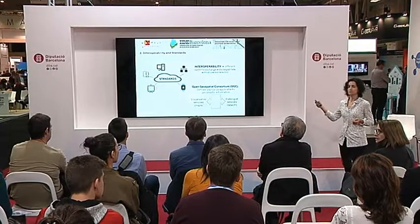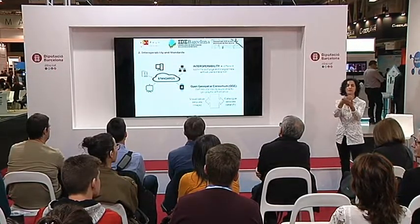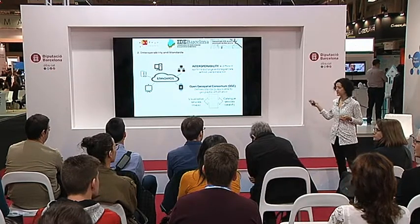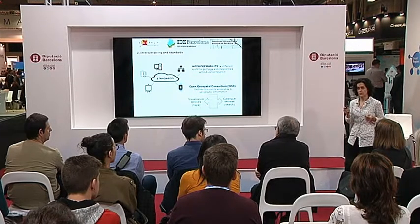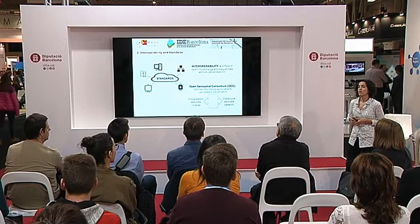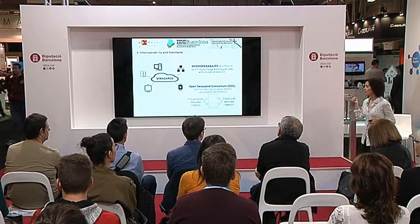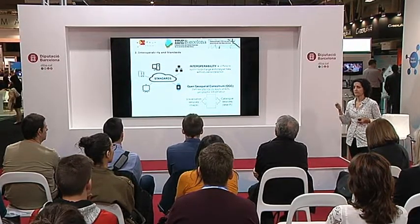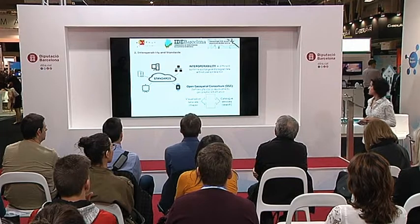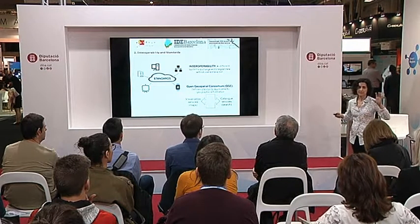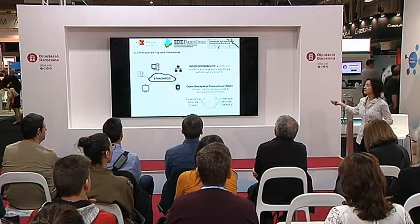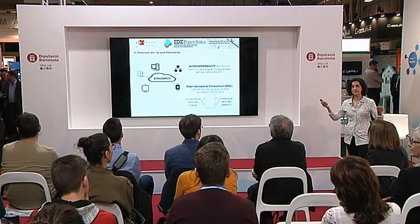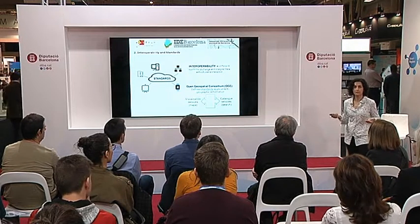Visualization services permit the user to visualize the map on the device. Metadata catalog services help programs automatically find which data is available, where it is located, and how they can collect that data automatically. Now we have standards, we have interoperability, and we have geographic information — but who organizes all these elements in order to have a useful system?